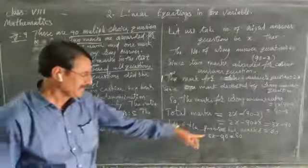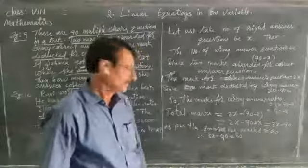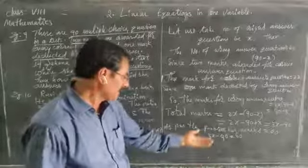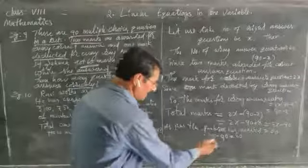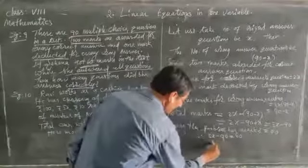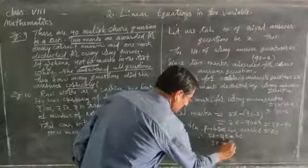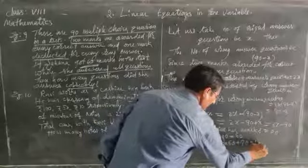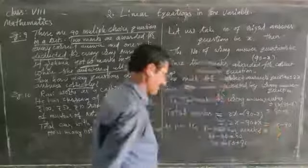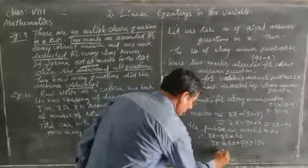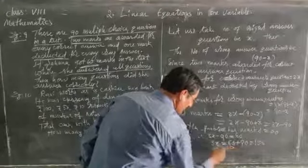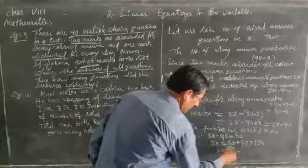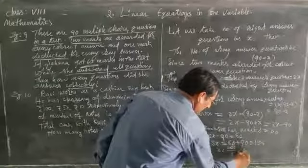This gives us a simple equation. We need variables on one side — the left-hand side. Send the 90 to the other side: 3x equals 60 plus 90, which becomes 3x equals 150. So x equals 150 divided by 3, equal to 50.